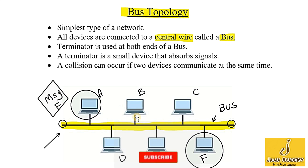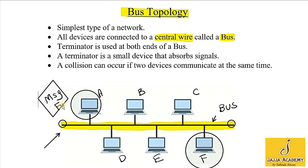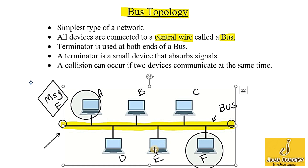If this message reaches computer B, it will check the address of the packet or message. As the address is not B, computer B will ignore the message. Similarly, C, D, and E will all ignore the message because the destination address does not match any of them. But computer F will keep this message and receive it because the destination address matches computer F. This is how communication is made in a bus topology.